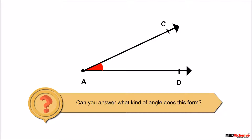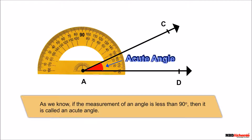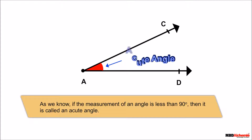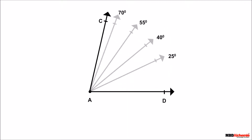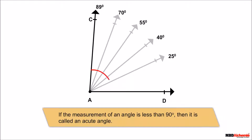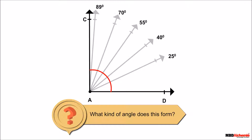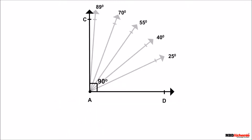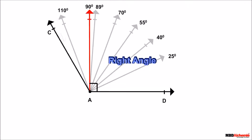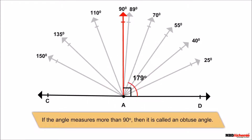This forms an acute angle. If the measurement of an angle is less than 90 degrees, it is called an acute angle. If I move the ray up to 90 degrees, the measurement of an angle equal to 90 degrees is called a right angle. If I move the ray up to 179 degrees, and the angle measures more than 90 degrees, then it is called an obtuse angle.